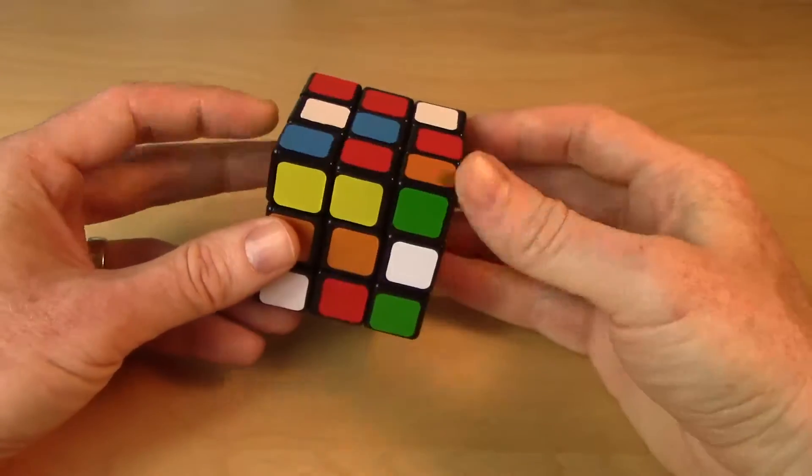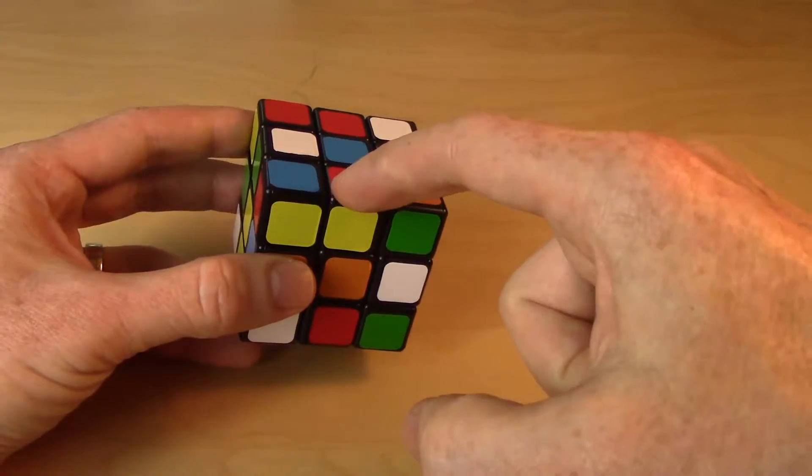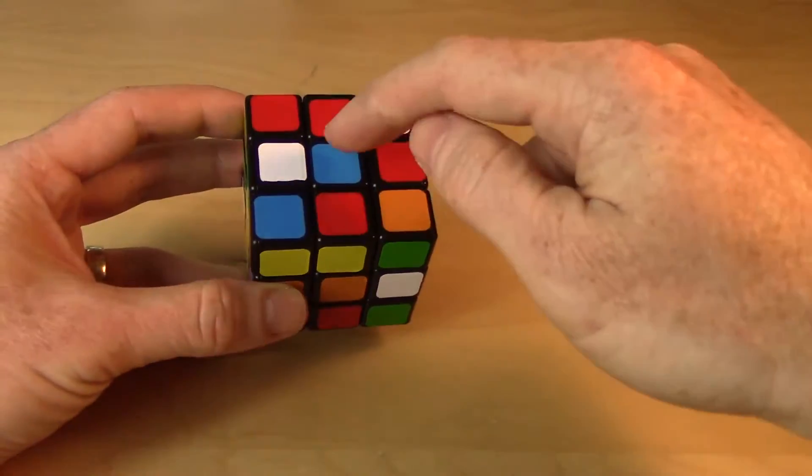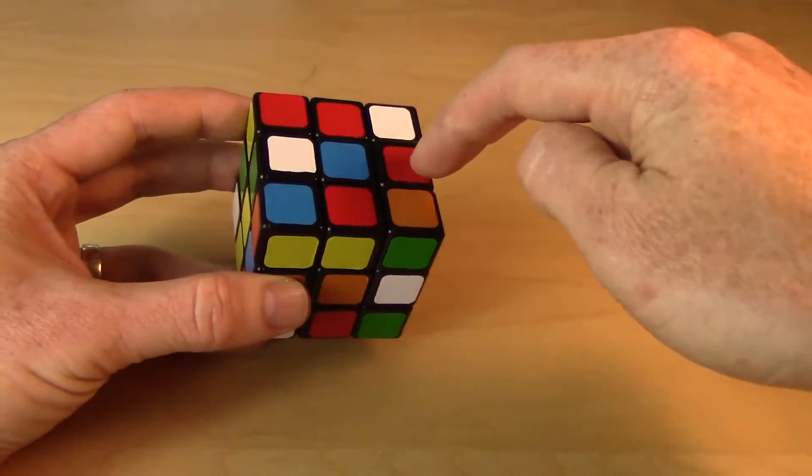Hi everyone, this is step one of our solution and the goal here is to make the cross on the top. Here I'm taking blue to be my top color and I'm going to make a cross on the top, fill in those edge pieces.